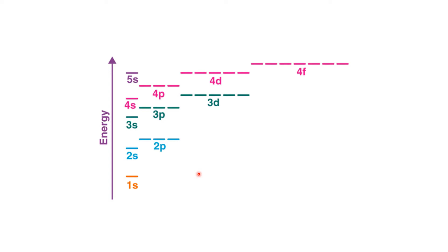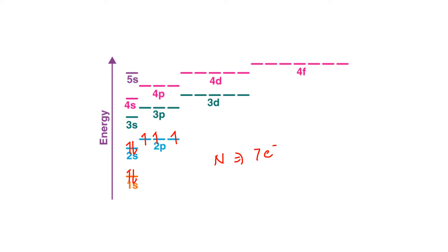What we do is arrange the orbitals according to their energies and then start filling up the orbitals with electrons. We need to see how many electrons are present in that element. For example, nitrogen has a total of 7 electrons and each orbital can accommodate a maximum of 2 electrons. So 1s will have 2 electrons, 2s will have 2 electrons, and 2p will have 3 electrons — a total of 7 electrons.